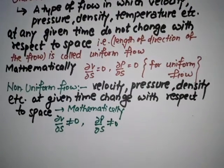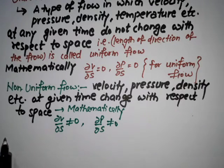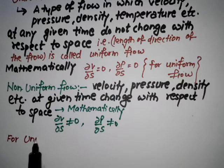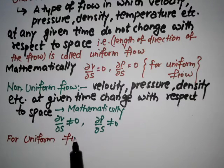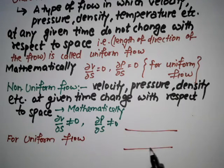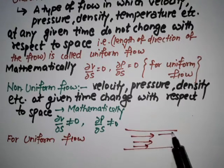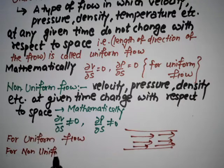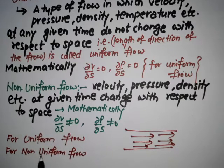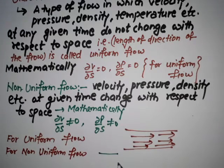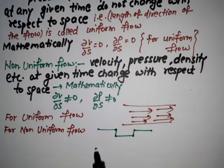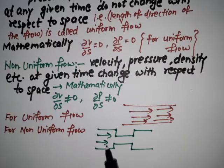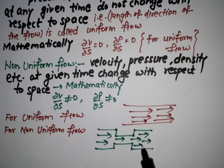If we try to show with the help of a diagram: for uniform flow, the flow is uniform when the section is uniform. For non-uniform flow, the section is non-uniform. When the section is different at different points, this is non-uniform flow.